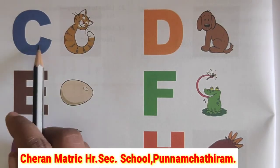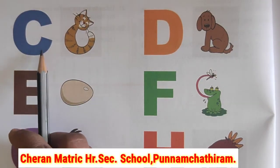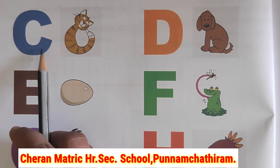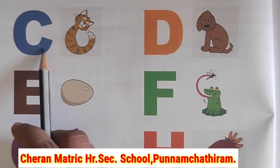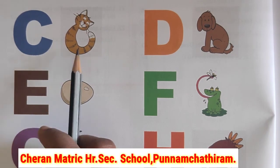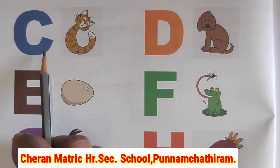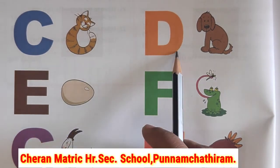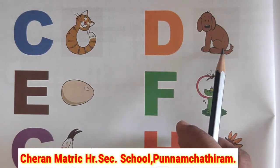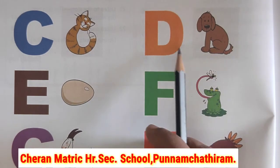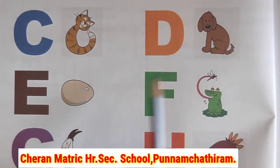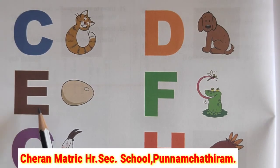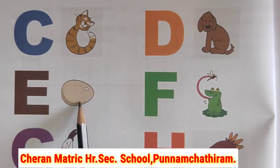B, after C. What letter is this? Capital C. C, cat. C after capital D. D, dog. D after capital E. E, egg.